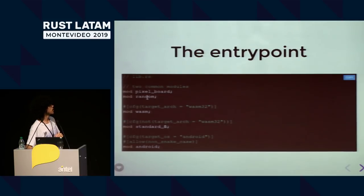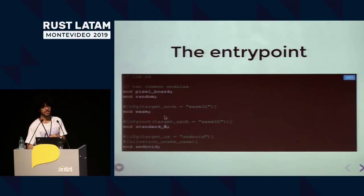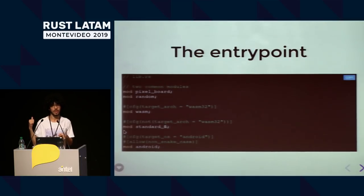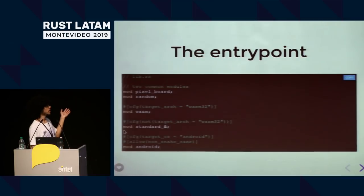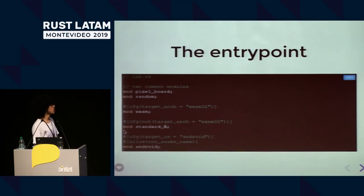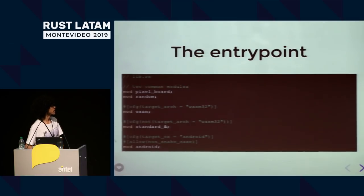The library has common modules and three platform-specific modules. Here's the WebAssembly one and the Android one. But there's no separate iOS module — we discovered at PagarMe that exporting functions for iOS and for .NET and some other specific platforms is very similar, basically the same thing. So I created just a standard FFI module that can probably be consumed by other platforms besides iOS.